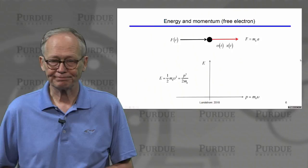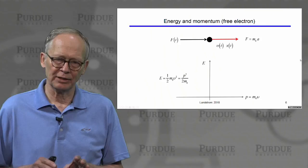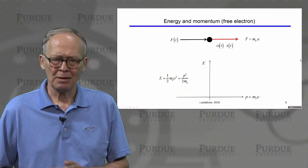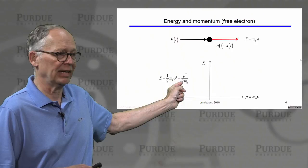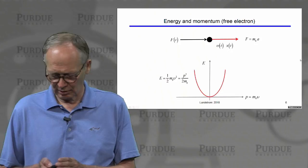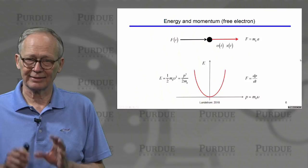Another concept to mention is the relation between energy and momentum. For a free particle in vacuum, energy is one half mv squared — the kinetic energy. Since momentum p equals mv, we can write energy as p squared divided by 2m. Plotting energy versus momentum gives a parabola. Equivalently, F equals ma can be written as F equals dp/dt — force is the time rate of change of momentum.